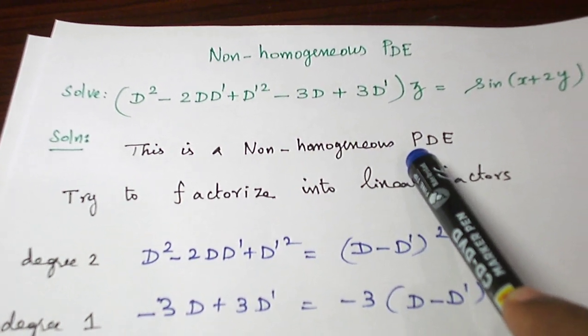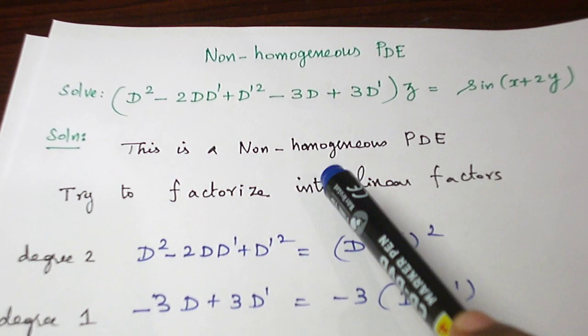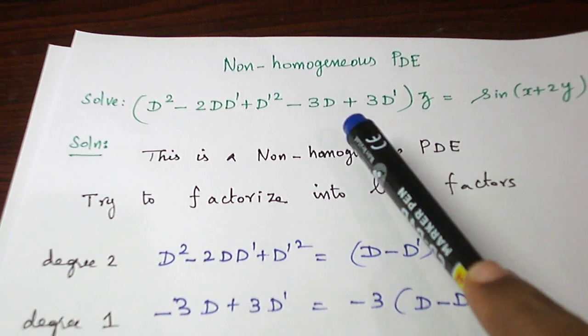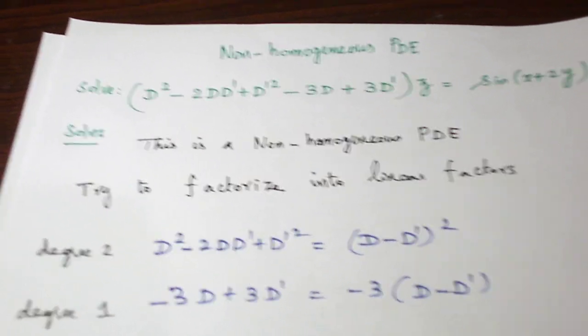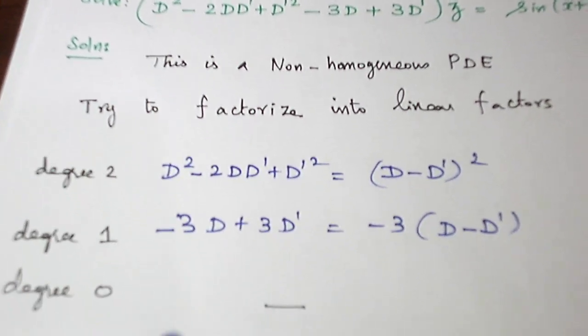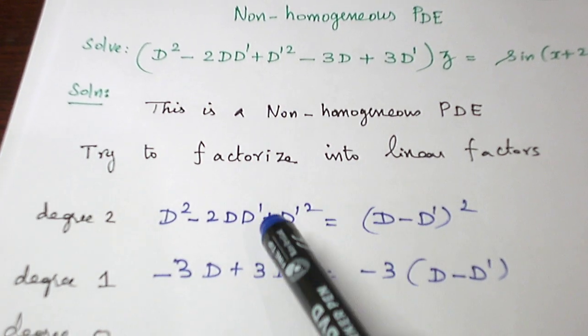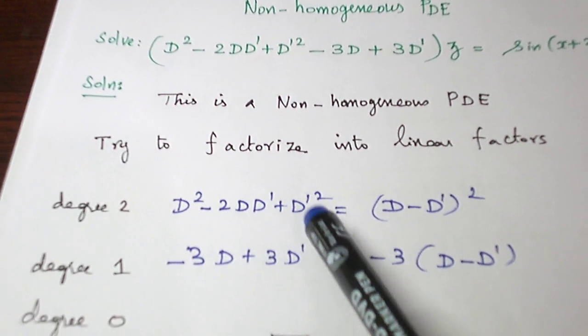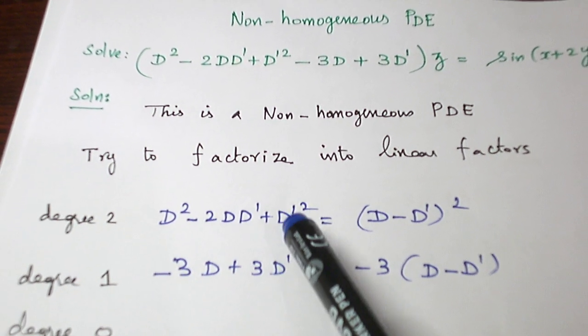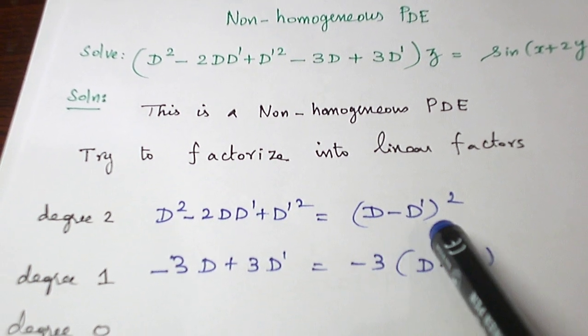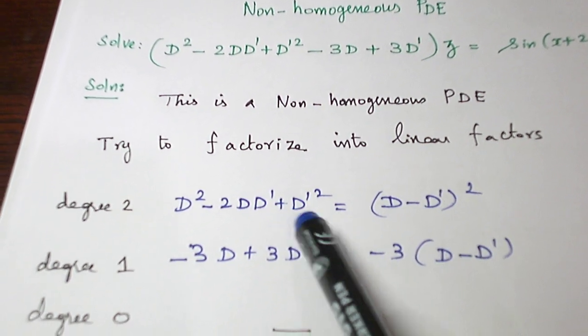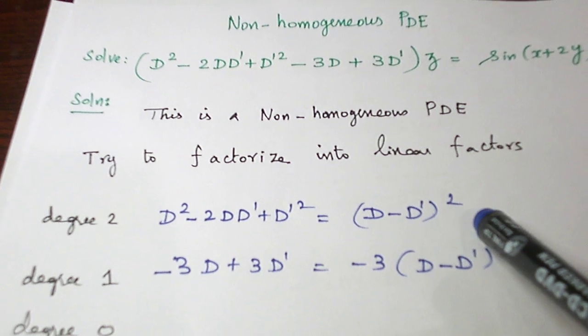For non-homogeneous partial differential equation, first of all, you try to factorize it into linear factors. For that, first let us take the degree 2 terms: d square minus 2d dash plus d dash square. It is in the form of a square minus 2ab plus b square, which can be written as a minus b whole square. So this can be written as d minus d dash full square.